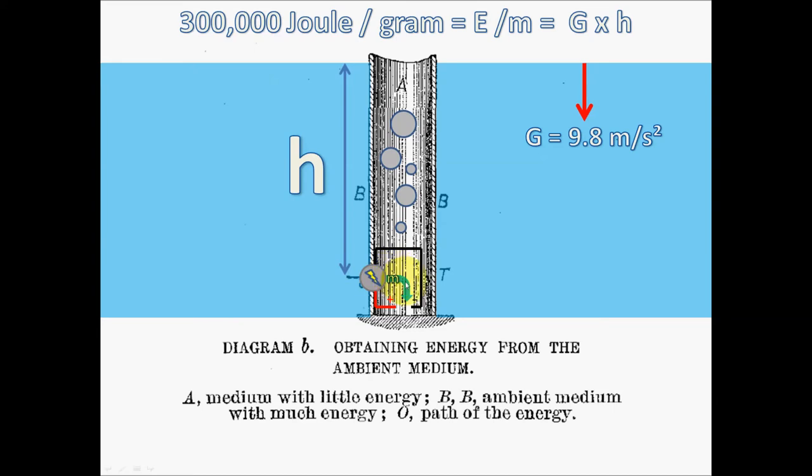When you get to a height that gives the potential energy of the mass of water flowing into the tube roughly 300,000 joules per gram, that's enough to electrolyze the water. And so this is the example Tesla uses in the article.